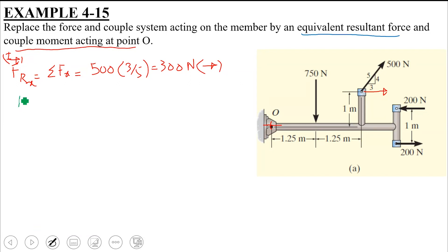Similarly, applying the same equation along the y axis in order to find out FRy. This FRy should be equal to summation FY, the forces which are acting along the y axis. One is this 750 N force acting vertically downward, that is towards the negative y axis. So you have this force. Second, you will have 500 N force. So the component will be 500 into 4 over 5. And since this component would be acting towards the positive y axis, so you have this positive sign mentioned.